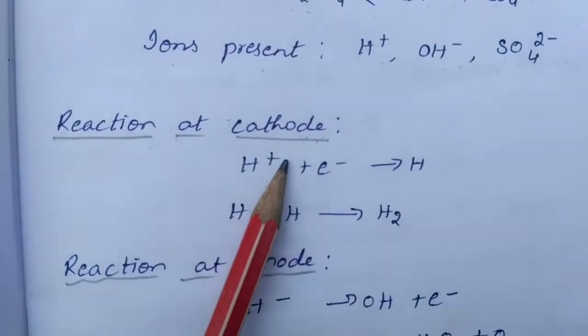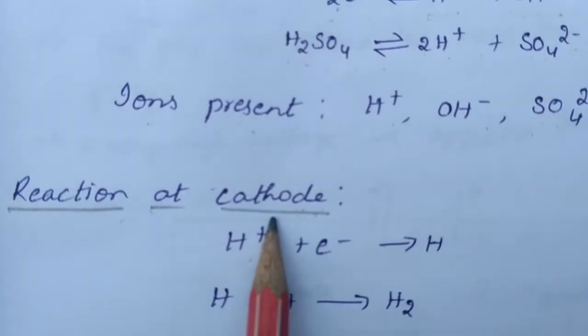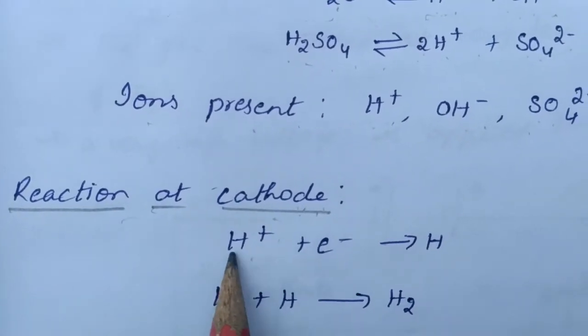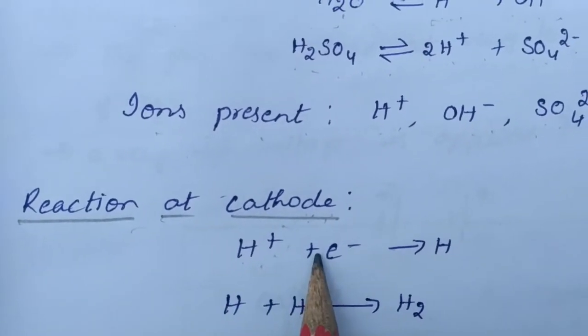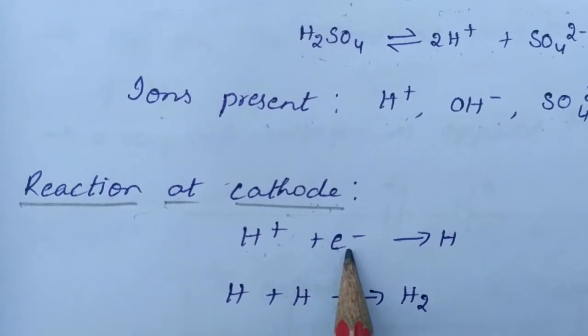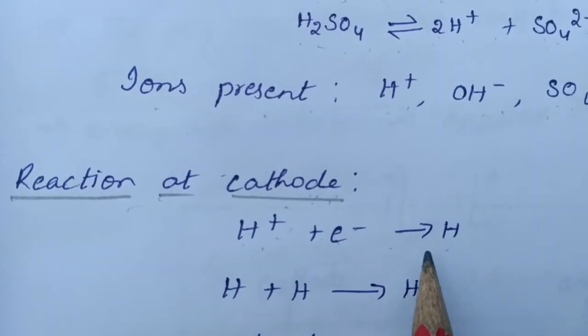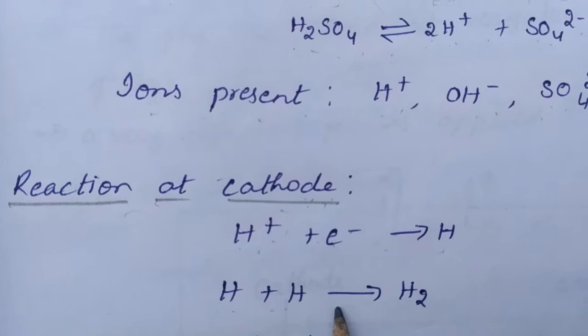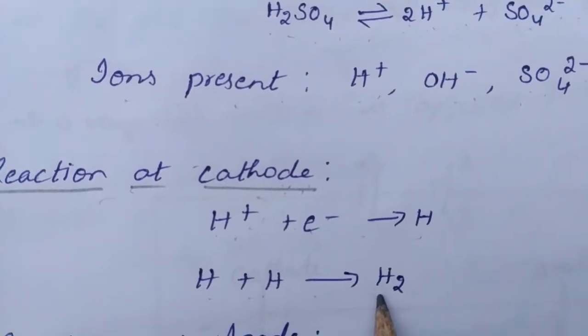Reaction at cathode: As it is a negative electrode, H+ ions plus one electron gives rise to hydrogen. Two hydrogens will combine and give rise to a hydrogen molecule.